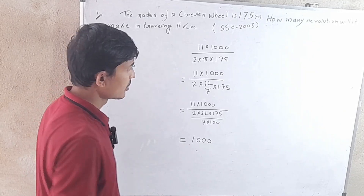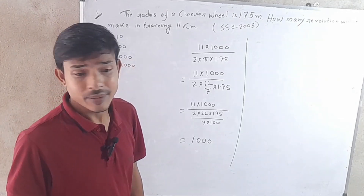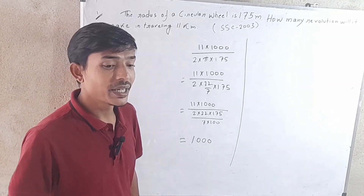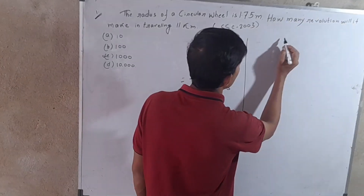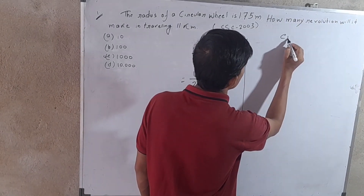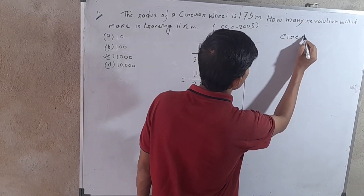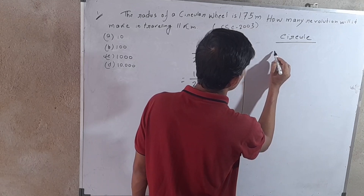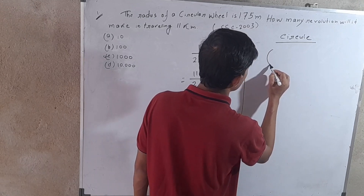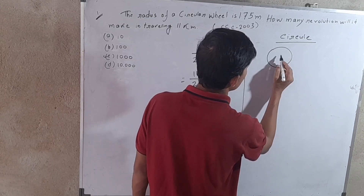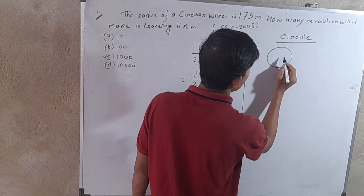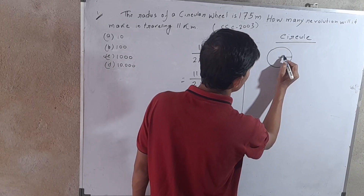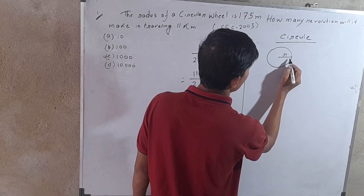Now let me explain the circle in detail. A simple circle has a center and a radius, which I will call R.